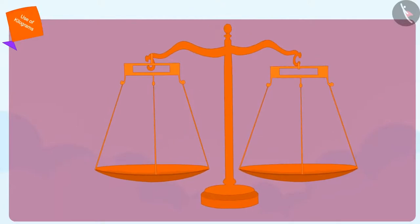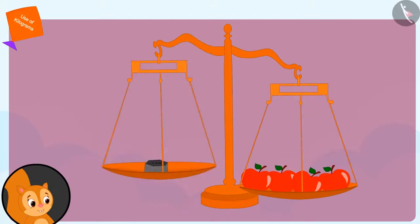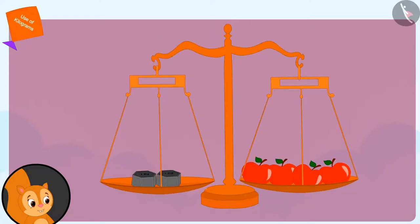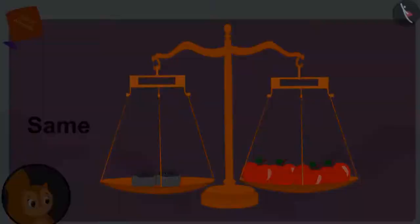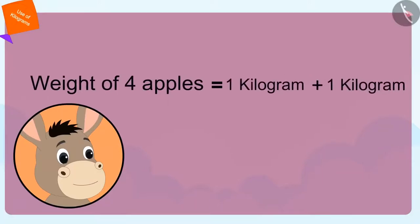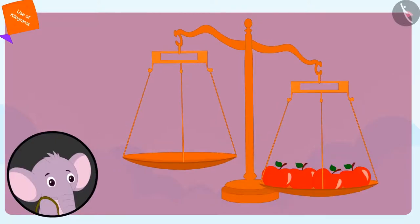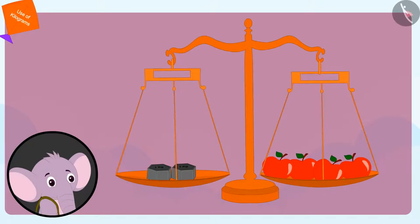Bhola then weighed the four apples of Chanda on the scales of his shop. He placed the apples on one side and a 1 kg weight on the other side — the apples were still heavier. Now Bhola placed 1 kg more weight and both sides of the scale came to the same level. The weight of four apples of Chanda is equal to 1 plus 1, that is 2 kg. Then he weighed Appu's four apples in exactly the same way and found that they also weighed 2 kg.